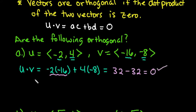Since this adds up to zero, we can say that yes, these two vectors are orthogonal.